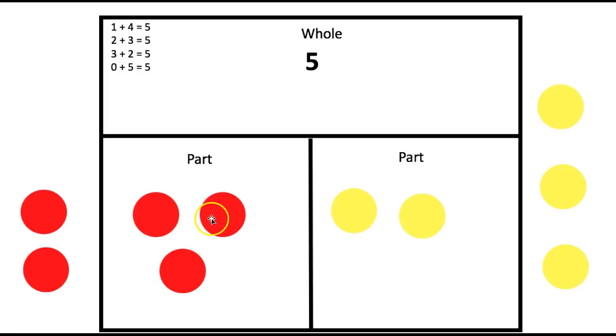Now, we have three red counters and two yellow counters. So, one part is three, and the other part is two. Let's count and see how many we have now. One, two, three, four, five. Okay, so we just proved that three red counters plus two yellow counters equals five. Still gives us the number five.